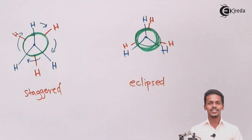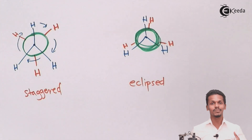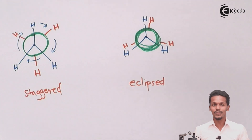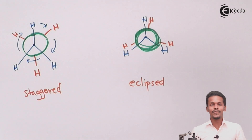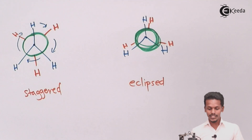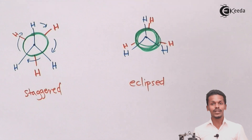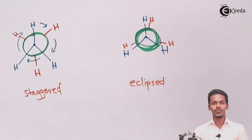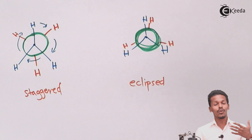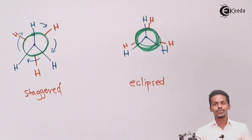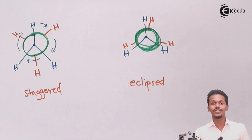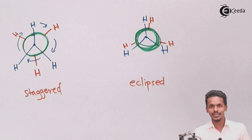These were the two conformations of ethane — staggered and eclipsed — represented using sawhorse and Newman's projections on a two-dimensional plane. Thank you friends for watching this video. I hope you have understood how to represent the conformation of ethane using these projections. Please share this video with your friends and don't forget to subscribe to the Ikeda channel.